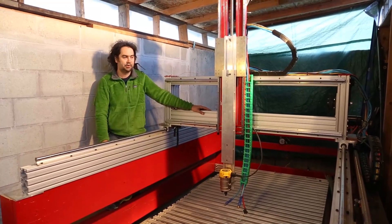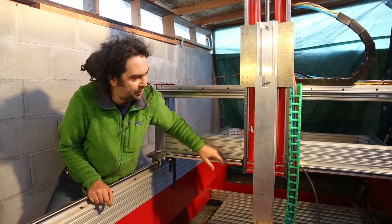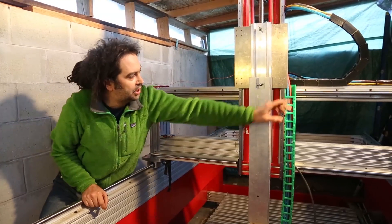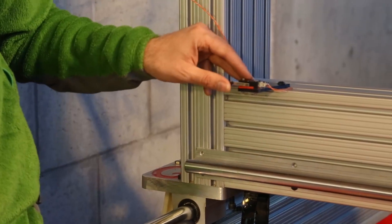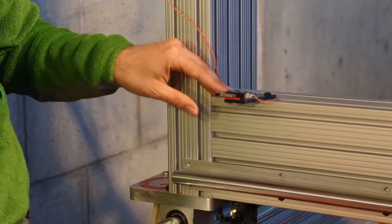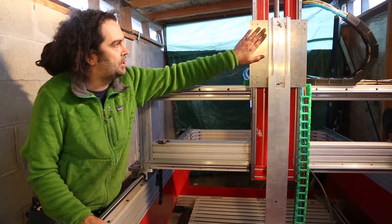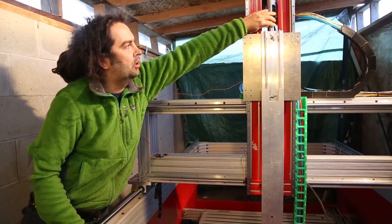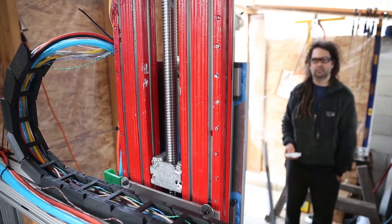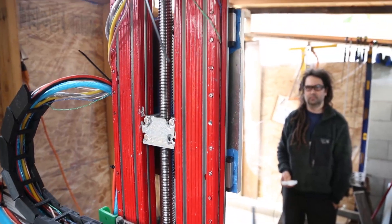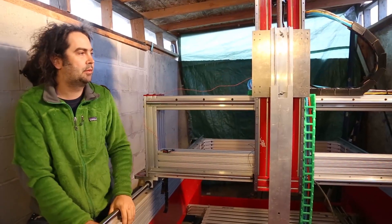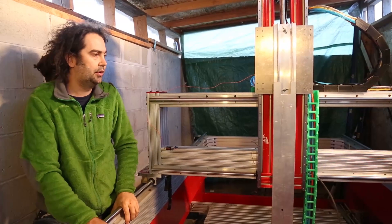We use a number of 3D printed parts, including these cable chains. We also designed these parameterized limit switch mounts. I also needed a customized part to attach this Z plate to our Z ball screw. I couldn't just print a plastic part for that because the forces under load will be just too much for a plastic part.